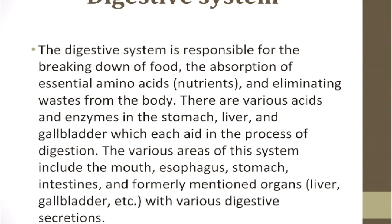The digestive system is responsible for the breaking down of food, the absorption of essential amino acids and nutrients, and eliminating waste from the body. There are various acids and enzymes in the stomach, liver, and gallbladder which each aid in the process of digestion. The various areas of this system include the mouth, esophagus, stomach, intestines, liver, and gallbladder. Key things to know: the digestive system breaks down food, absorbs nutrients, and eliminates waste.